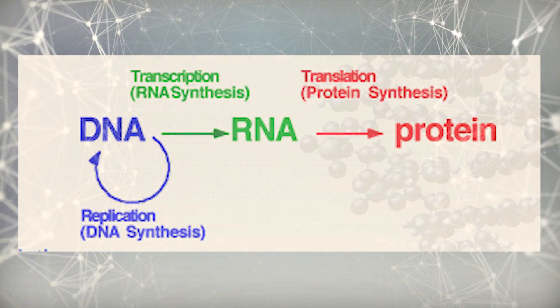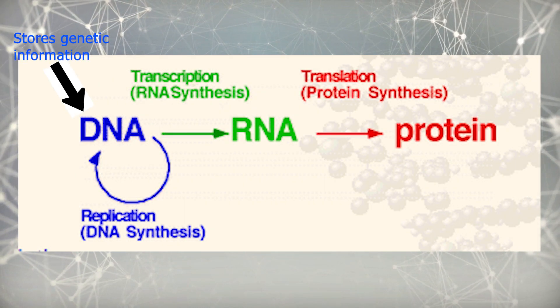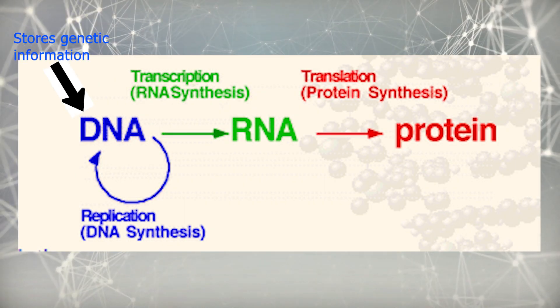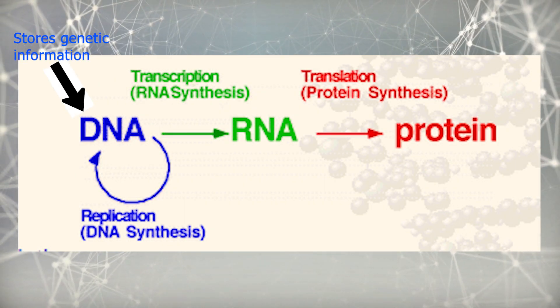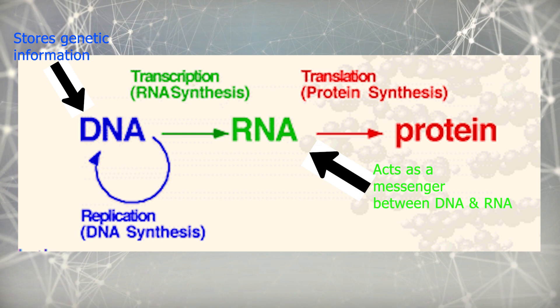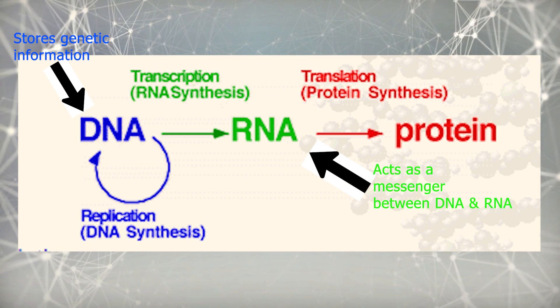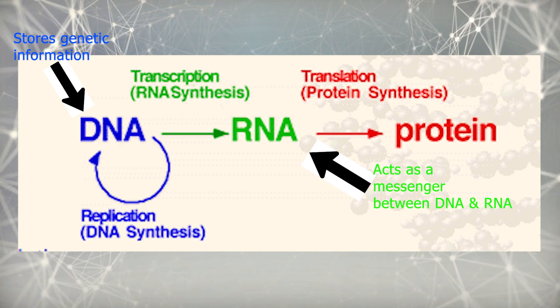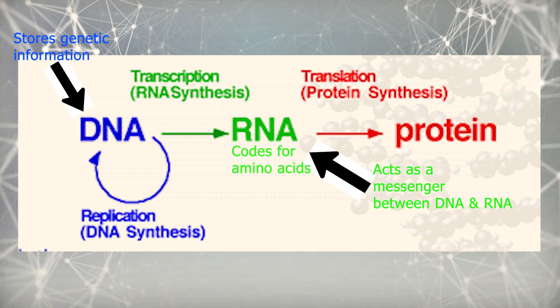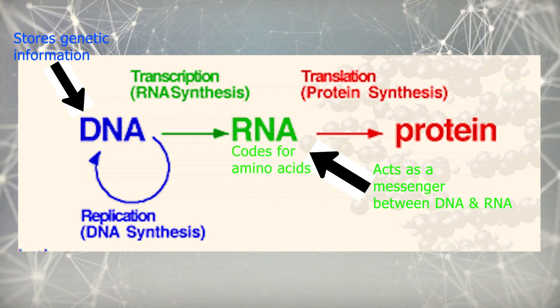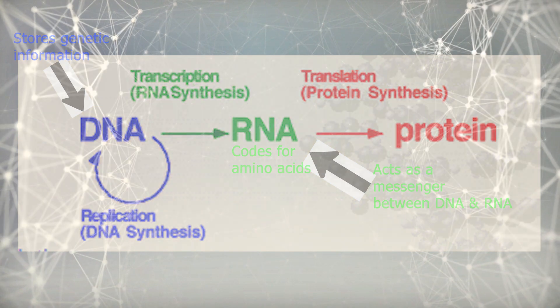Number five, DNA is responsible for storing and transferring genetic information, and RNA acts as a messenger between DNA and ribosomes to make proteins. RNA directly codes for amino acids that make up proteins.